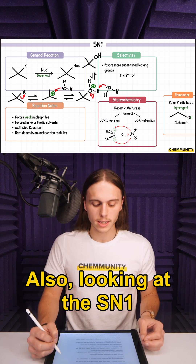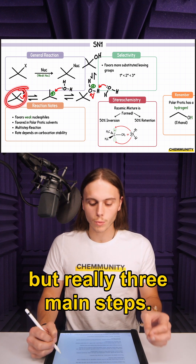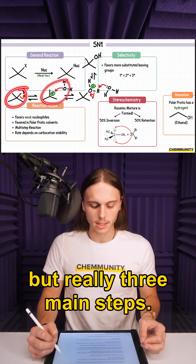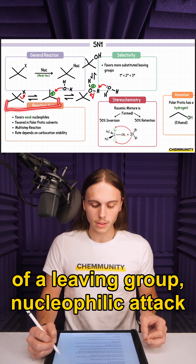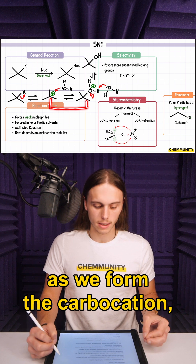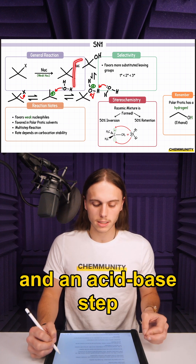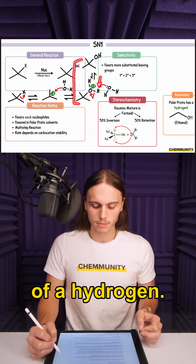Looking at the SN1 mechanism, there are two, but really three main steps: carbocation formation via loss of a leaving group, nucleophilic attack as we form the carbocation, and an acid-base step if we need to get rid of a hydrogen.